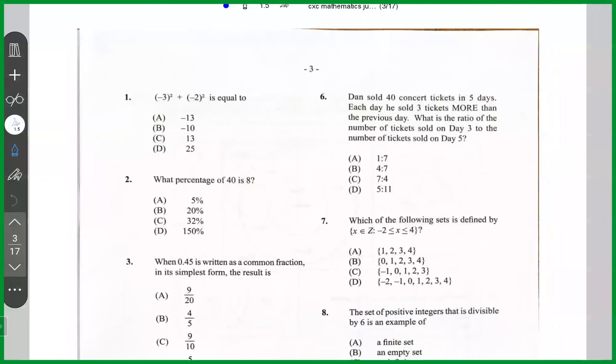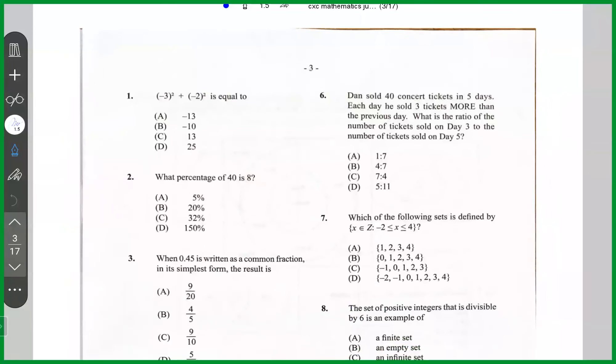All right, so question number one says minus three square plus minus two square. So if we're working this out, minus three square is minus three times minus three, which is positive nine. Plus minus two square, which is four. So the answer here is 13. So the answer for question number one is C.